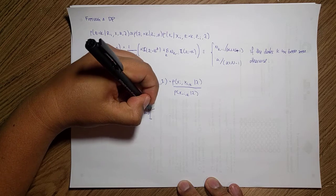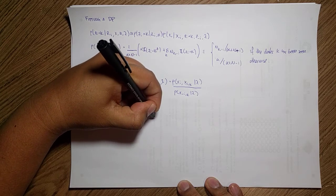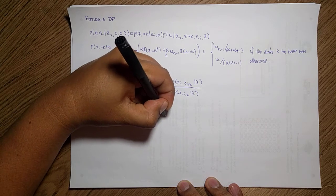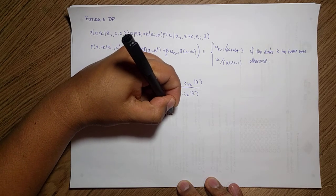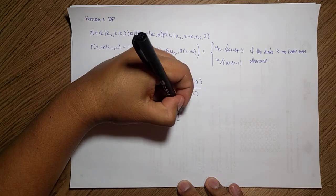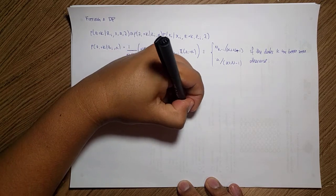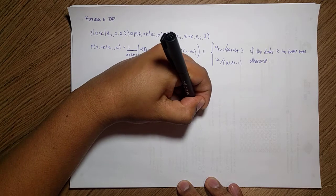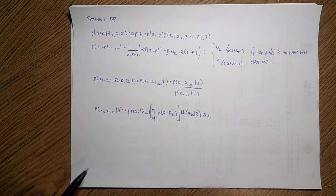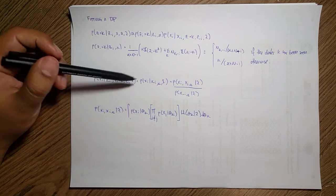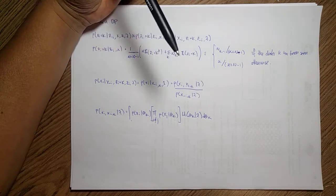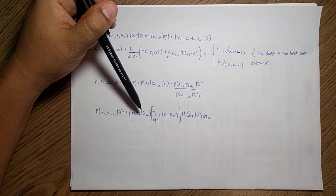Times all the other i different from j from p(x_j) given theta_k, and my base measure over here, so theta_k given lambda d(theta_k).